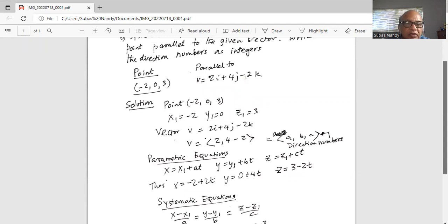So x1 is equal to -2. So x is -2 + 2t, and y is y1 plus bt. So y1 is 0, 0 plus b is 4, so it's 4t. And for z, it is z1 plus ct. z1 is 3 and c directional number is -2. So it is 3 - 2t.